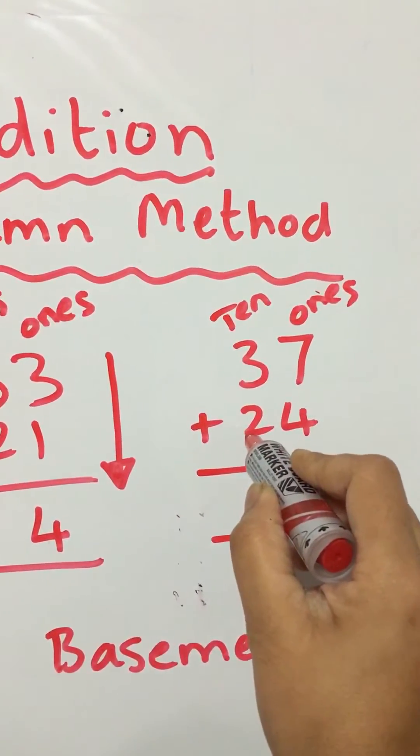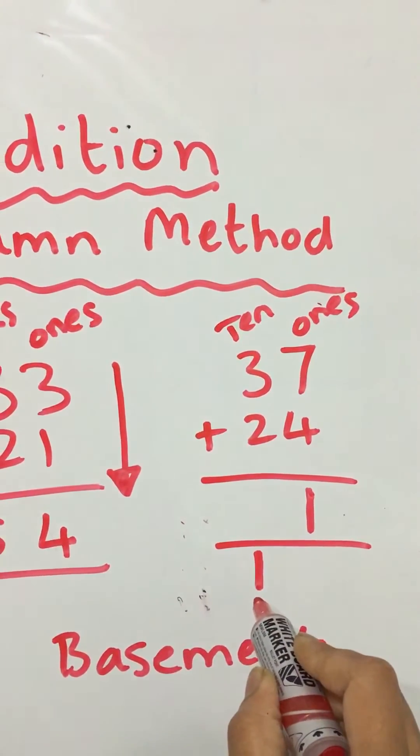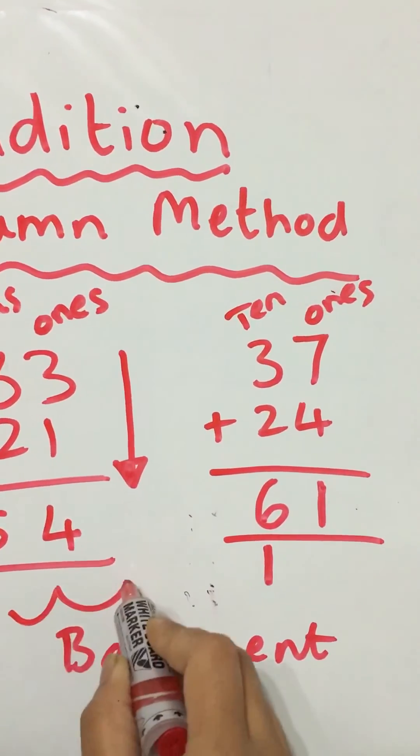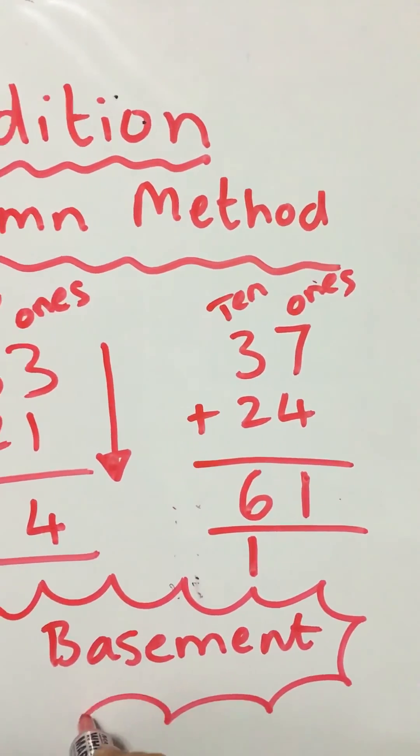3 plus 2 is 5. Collect the 1 in the basement is 6. So this is the basement method.